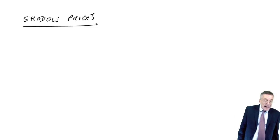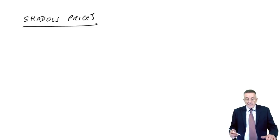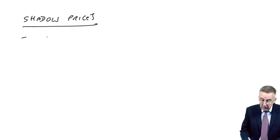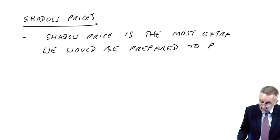And it's the same example, but it says, example three, using the information for example one. Calculate the shadow price of each of the constraints, materials, labour and demand. Well, let me first write up what the definition is of shadow price, and then I'll actually show you how we do it. The shadow price is the most extra we would be prepared to pay for one extra unit of the limited resource.